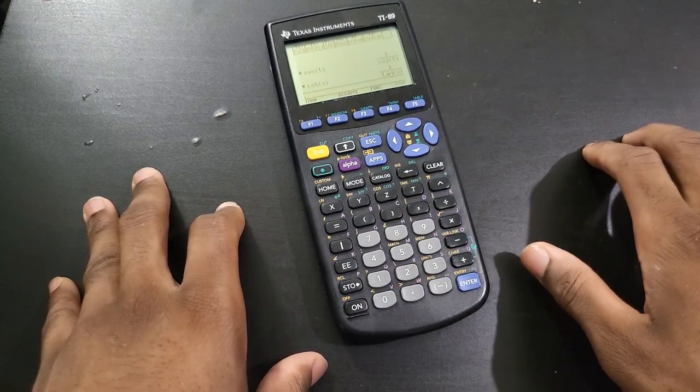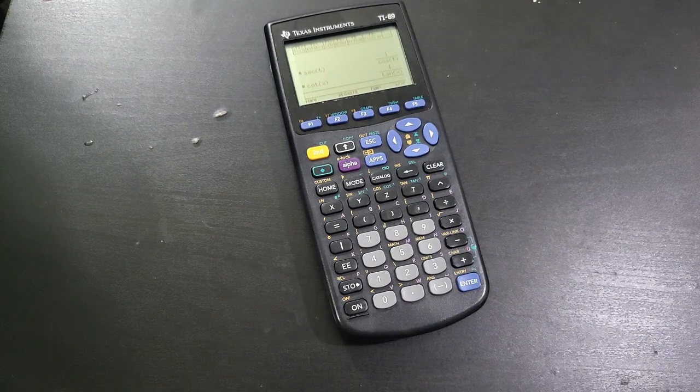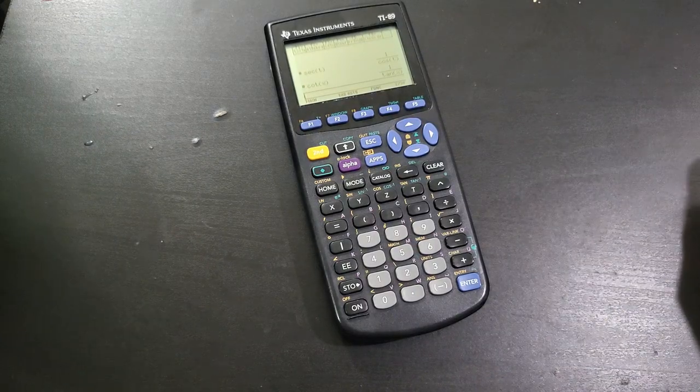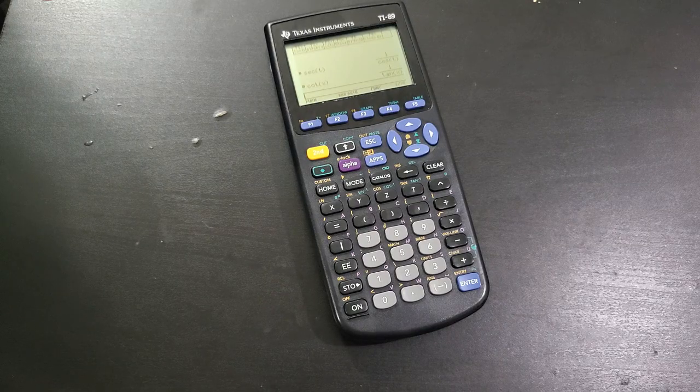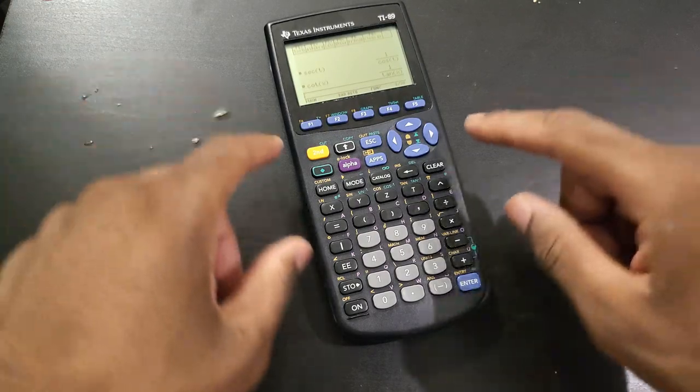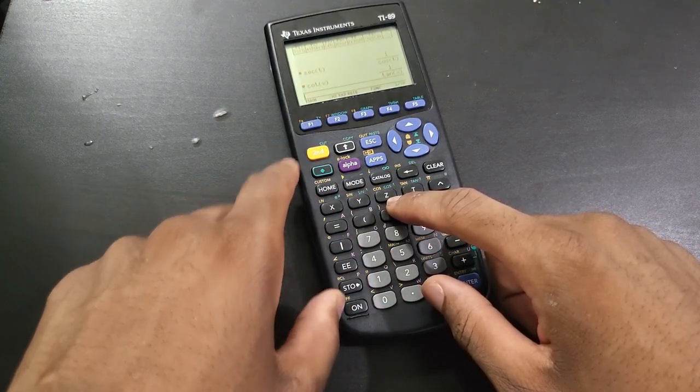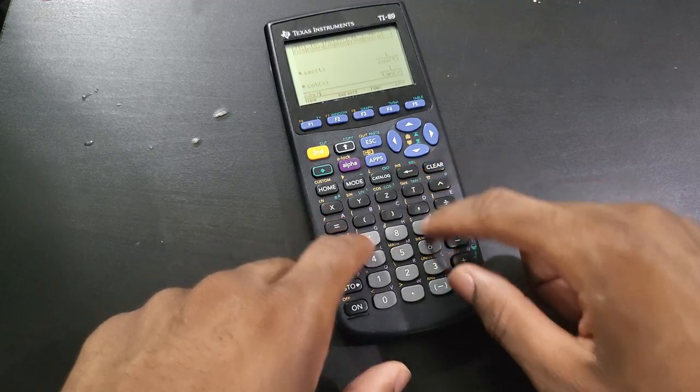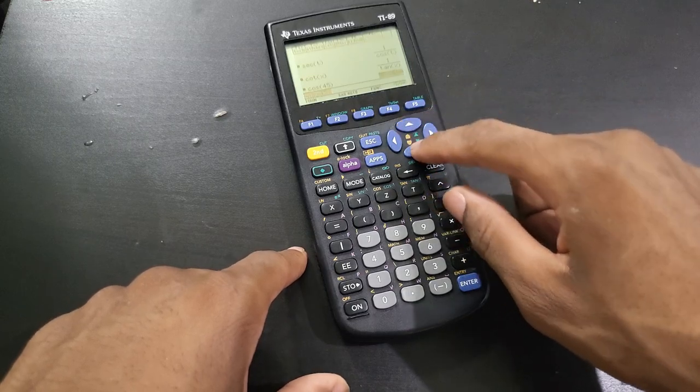Another thing is the angles. If you want to find the value of, let's say, cosine of 45 degrees, we already have a cosine key here, so it's going to be second and cosine of 45 degrees. Press enter, and if it returns the same thing, that means you must be in radian mode.